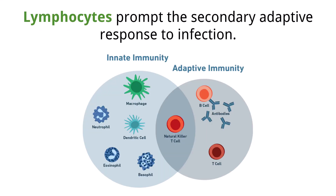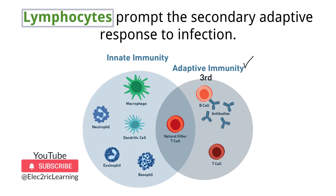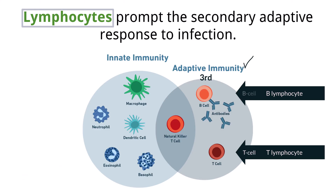If a pathogen gets past the first and second line of defense, it will start to travel through the body, infect cells, and replicate. At this point, the random phagocyte catch-all method is not effective. Instead, different types of immune system cells called lymphocytes start the adaptive immune process, our third line of defense. There are two main types of lymphocytes at play in this process, which are T lymphocytes and B lymphocytes. These names are commonly abbreviated to T cells and B cells.